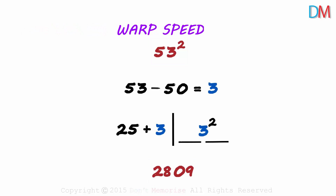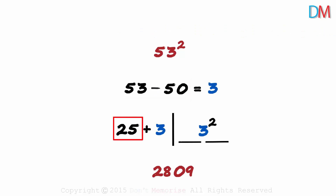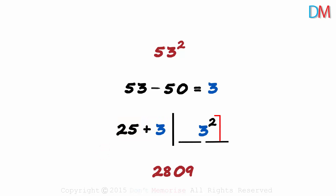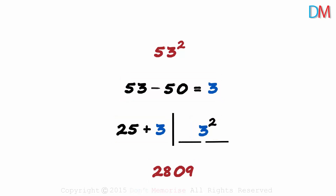That computation was at warp speed! To recap: find the difference of the number and 50; write the sum of 25 and the difference on the left; and write the square of the difference on the right. Just three steps and we have our answer. Should we try another one quickly?